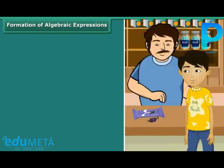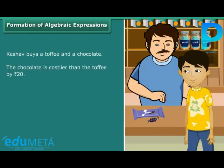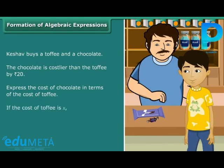Let us express some real-life situations with the help of algebraic expressions. Keshav buys a toffee and a chocolate. The chocolate is costlier than the toffee by 20 rupees. Express the cost of chocolate in terms of the cost of toffee. If the cost of toffee is x, the cost of chocolate is equal to x plus 20.